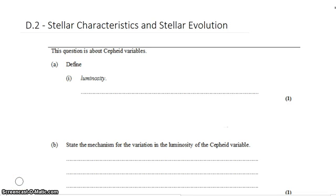David Kahn here with another question from the IB Question Bank on Cepheid variable stars. We'll start by defining luminosity. That is the total power emitted by a star.